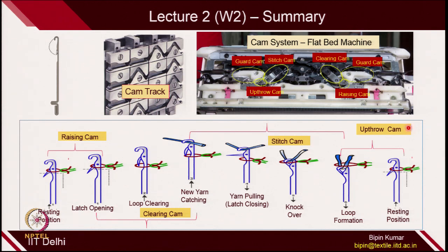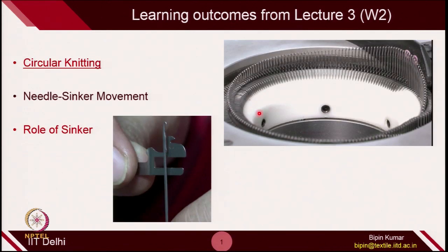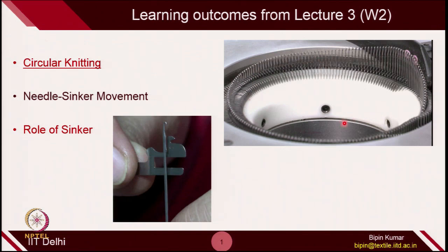Now we are going to change the technologies. In this particular lecture we are going to introduce new technologies related to circular knitting. As the name suggests, the knitting is done in a circular fashion. A new element I am going to emphasize is called the sinker. In the last lecture I introduced the sinker word and how the sinker loop is formed. But this time you are going to see the sinker element which plays a major role in circular knitting machines.